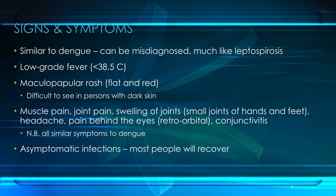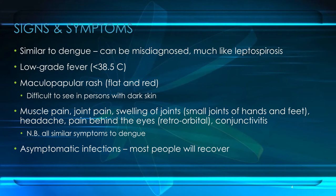Other common symptoms include muscle pain and joint pain, with possible swelling notably in the small joints of the hands and feet. We're also going to see headache and pain behind the eyes — we describe that as retroorbital pain — and we can also see conjunctivitis. I want you to particularly note that these are all similar symptoms to dengue fever, so it's not surprising that Zika might have been misdiagnosed in the past.